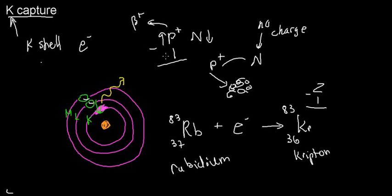In summary, K capture takes a nucleus that needs one proton turned into one neutron to become more stable. By capturing one electron and neutralizing the charge of a proton inside the nucleus, it effectively turns it into a neutron, decreasing the atomic number Z by one.